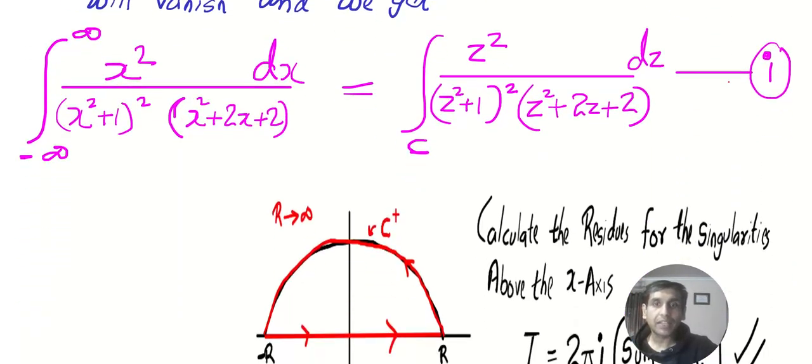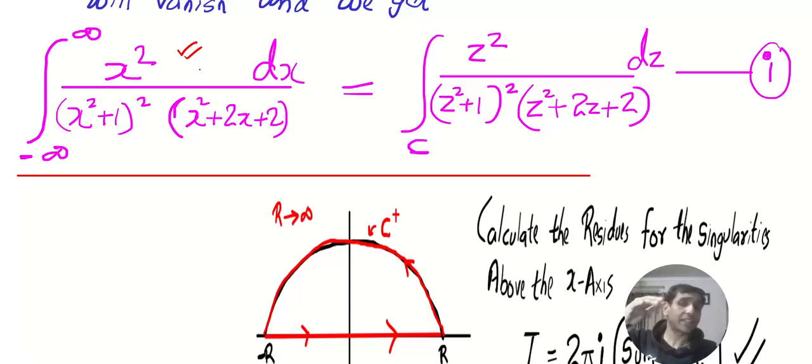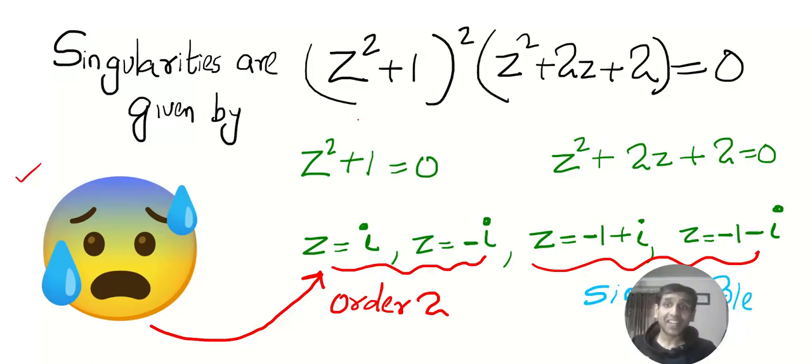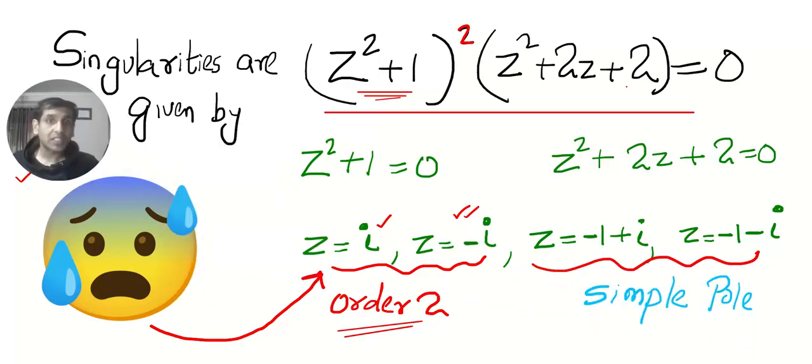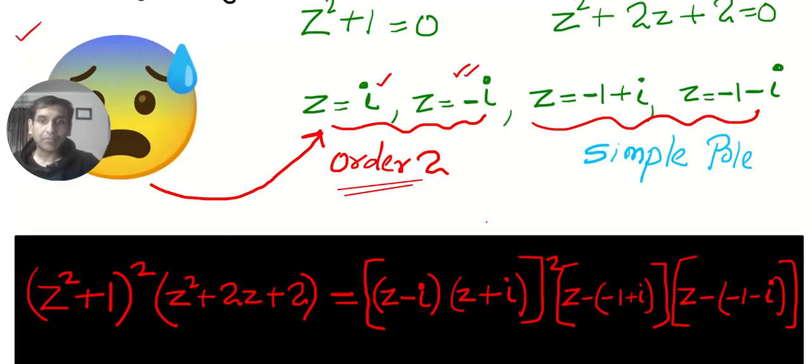And this will be gone according to Cauchy's Lemma. Anyway, you are supposed to write this drama either in the beginning or at the last of the answer. As always, now don't get scared. The singularities are given by the denominator equal to 0. This will give me two values i and minus i. But the problem is, can you see this whole square? That means the pole will be of order 2.